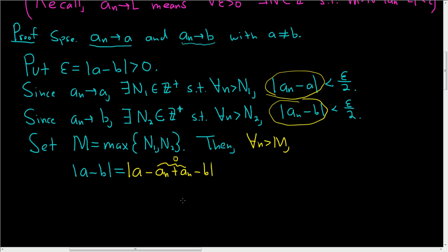And so now we're going to use the triangle inequality. So we're going to think of this as the first term and this as the second term. So this is less than or equal to the absolute value of the first term plus the absolute value of the second term.